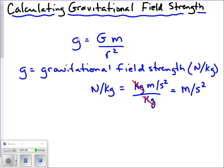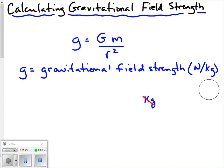Just remember, newtons per kilogram is the same thing as acceleration, which is why the gravitational field strength of the Earth is often given as 9.81 meters per second squared instead of newtons per kilogram. It's the same thing.